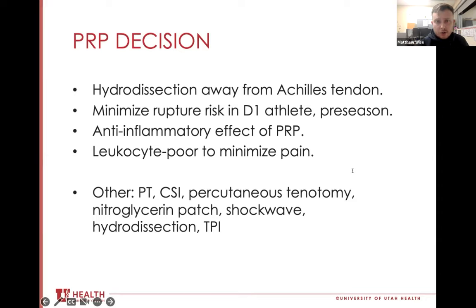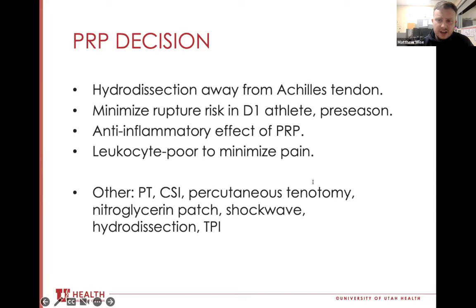As for a corticosteroid injection, the catabolic effect of steroids carries a risk of rupture, which we want to avoid in high-level athletes. The risk of rupture is theoretically higher in such a small, thin tendon. As far as percutaneous tenotomy, it's probably too small a tendon and maybe even too deep — I think of a plantaris tenotomy as a bazooka instead of a sniper rifle. With nitroglycerin patches, there's always a risk of hypotension and headaches. Shockwave would have been reasonable but is a bit better for insertional than mid-substance tendinopathy. PRP carries low risk and in our opinion had a higher chance of success, while hydrodissection with other injectates and trigger point injection are not necessarily direct treatments of tendinopathy. That's how we made our decision.